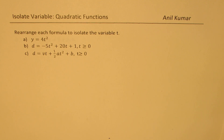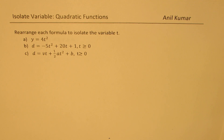The first one, y equals to 4t squared, is relatively straightforward. And then we have two real-life situation examples where d is equal to minus 5t squared plus 20t plus 1, t is greater than or equal to 0. And the last one is d equals to vt plus half a t squared plus b, where t is greater than or equal to 0. So the last equation is the very familiar projectile motion equation, so frequently used. Let us see how to isolate t in such conditions where a quadratic equation is involved.